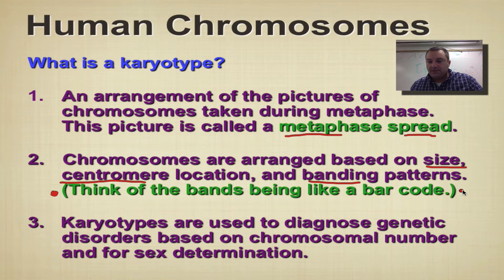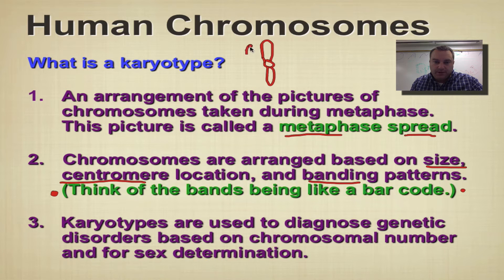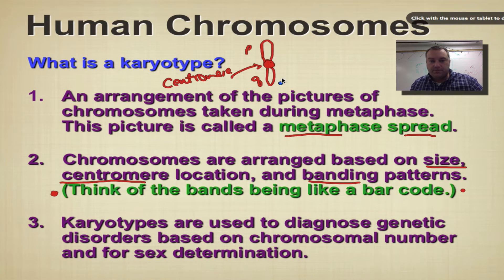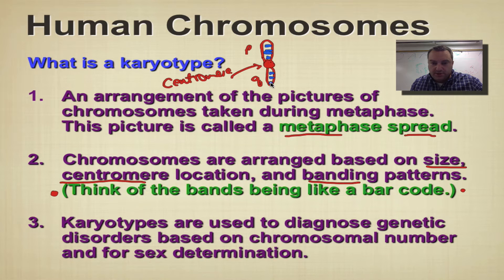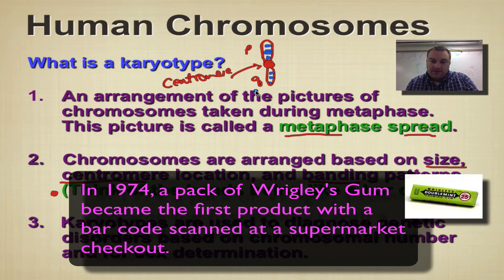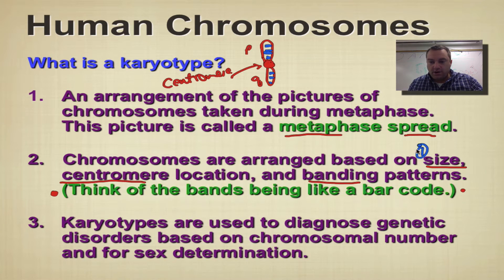Think of the bands as being like a barcode. Here's a fake chromosome — there's your centromere, the bottom arm is the P arm, and the upper portion is the Q arm. The chromosomes will stain in a pattern which we call the bands. Some bands are thin, some are thicker, and that's going to allow us to know what chromosome it is and where to place it. Arrangement is based on size, centromere location, and banding pattern — those three criteria determine which chromosome is which.